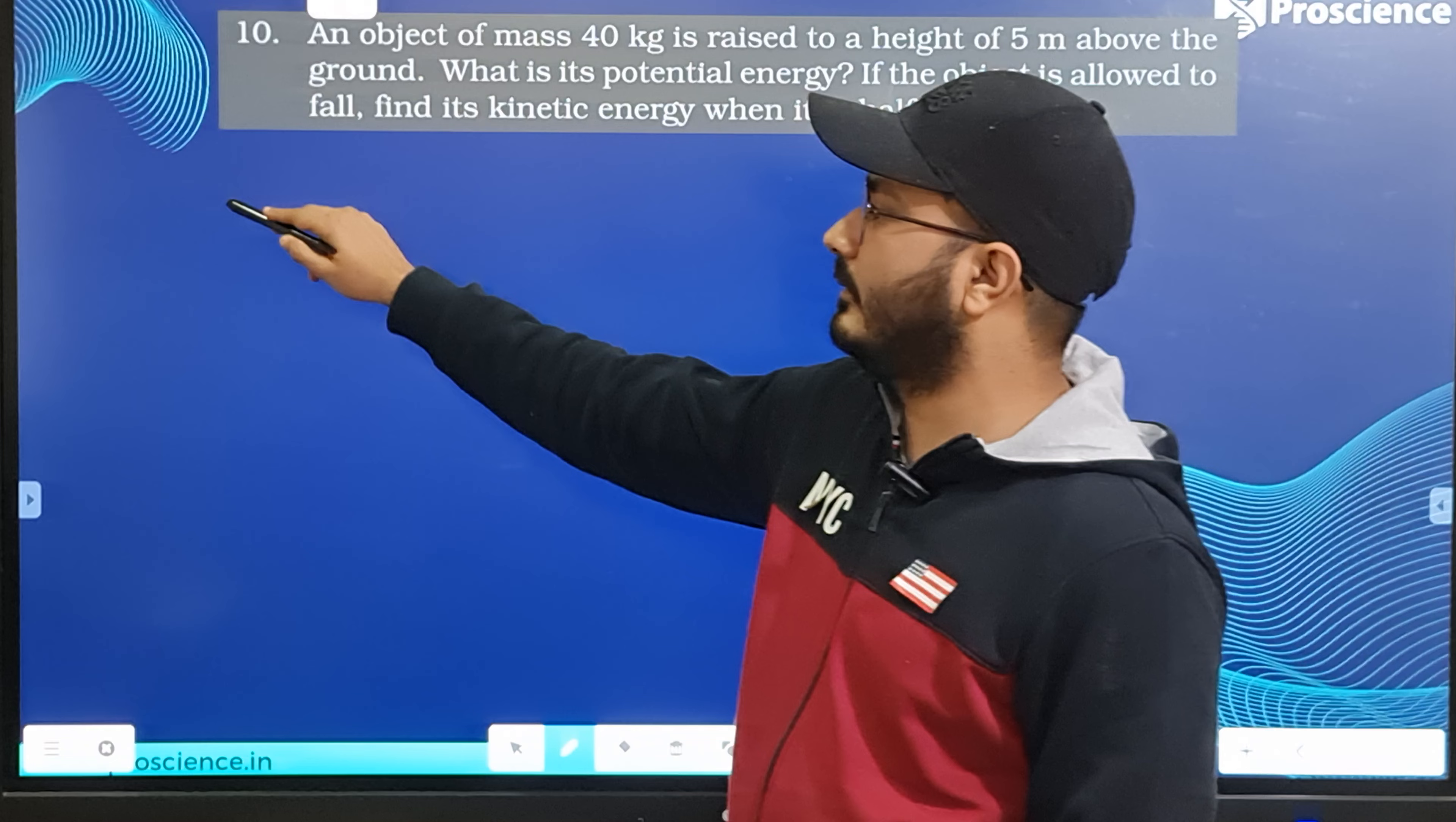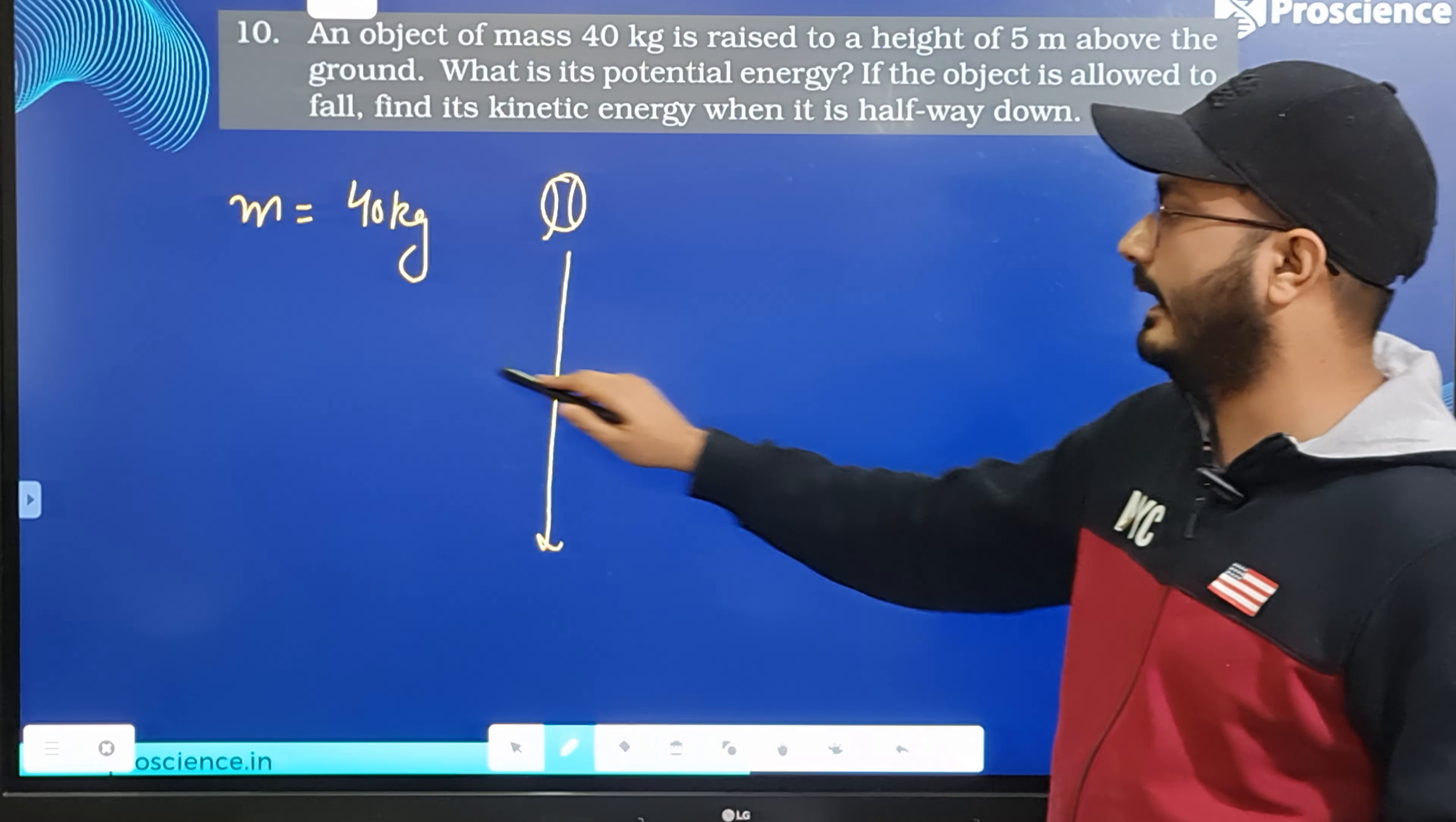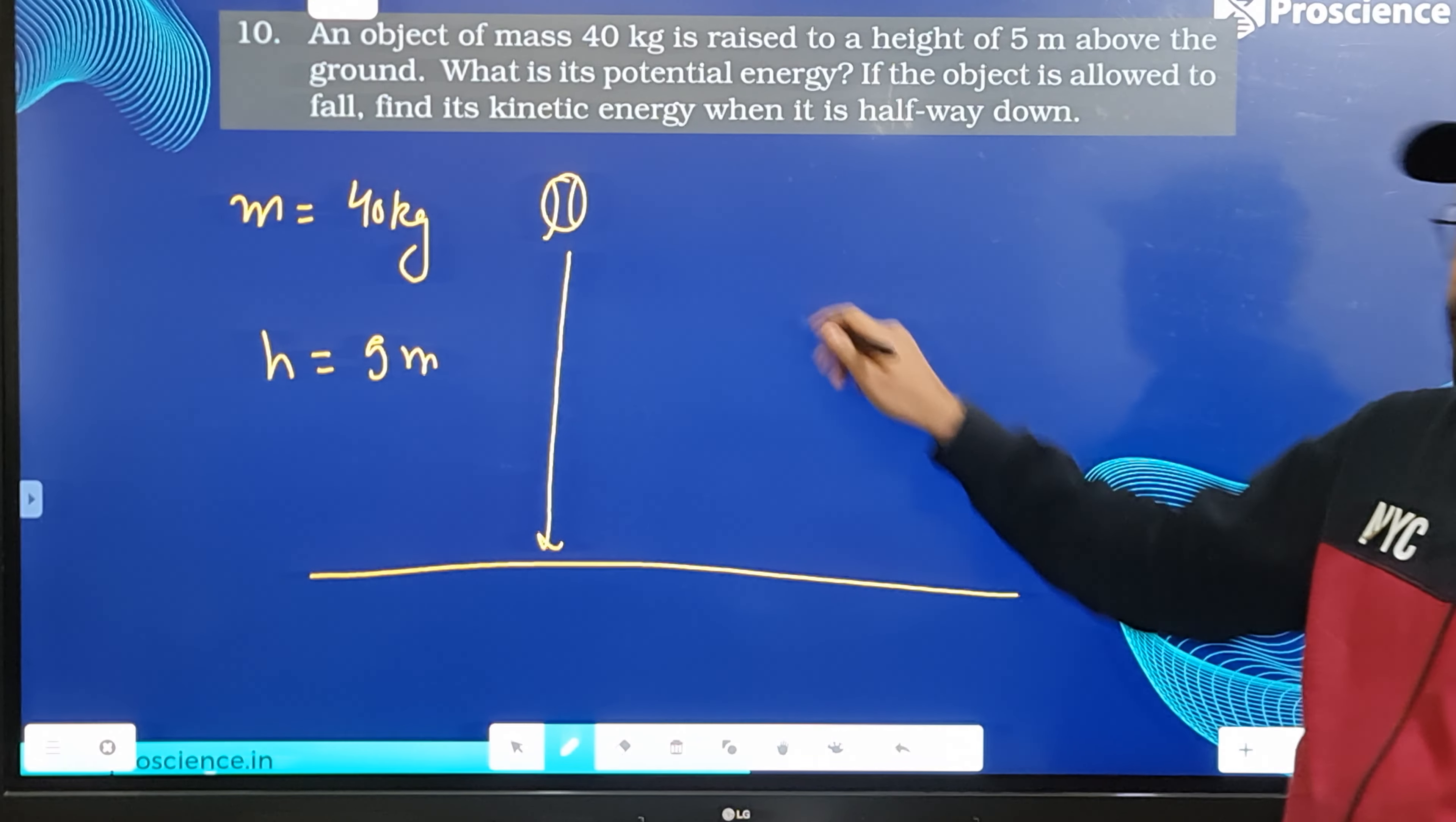The object's mass is given to be 40 kg, and the height is given as 5 meters to the ground. Let us find how much potential energy is at 5 meters up.